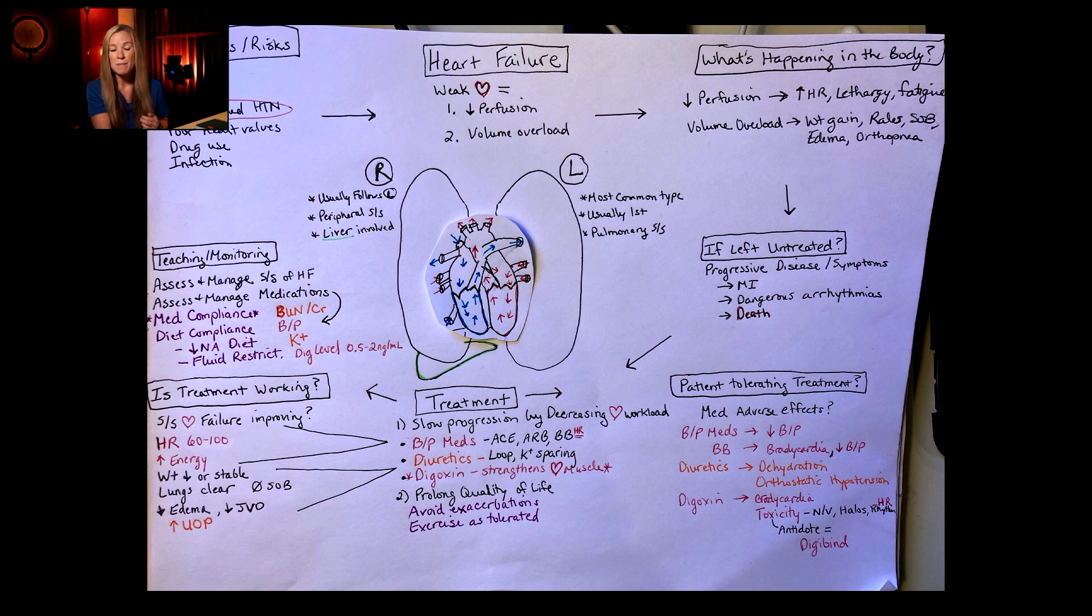Over here on my map I have an area where I'm going to put some key patho. What's happening in the body? What is going on here? The lack of perfusion means that the heart rate goes up to try to compensate and push blood through the body faster.